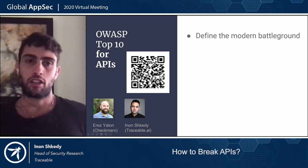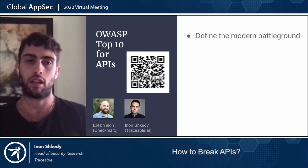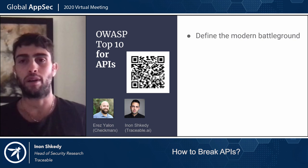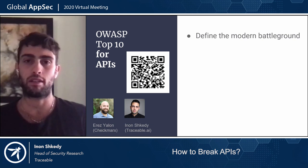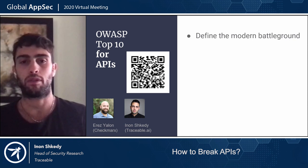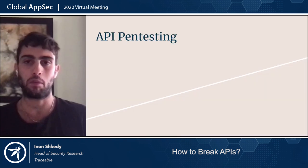All these changes made me join others and start the OWASP top 10 for APIs project and the OWASP API Security project in general. We tried to define this modern battleground. We collected a lot of data from bug bounty programs and came up with the final OWASP top 10 list, also incorporating feedback from the community to prioritize and add new vulnerabilities.